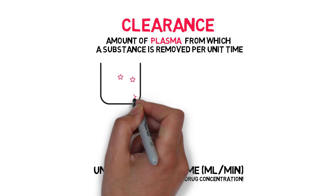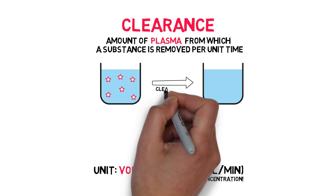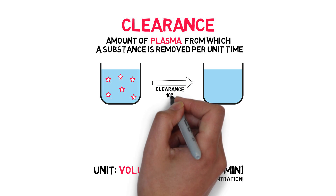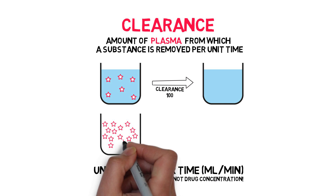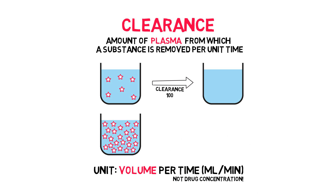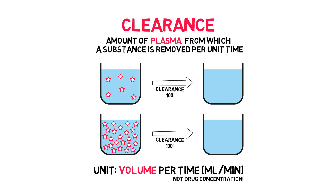See this bucket of water containing six drug particles? This volume is cleared by the kidney — now it has no drug particles. Let's call this clearance 100. See this other bucket of water? Same amount of water, but now 24 drug particles. This volume is cleared by the kidney as well. Note that the clearance is exactly the same: 100. The amount of drug that's cleared changes, not the volume.